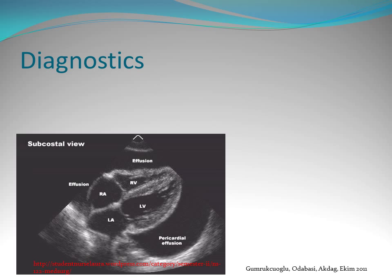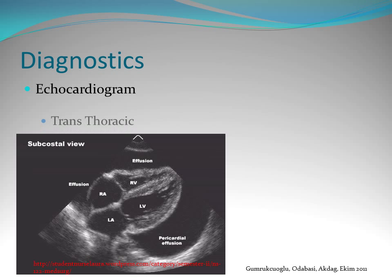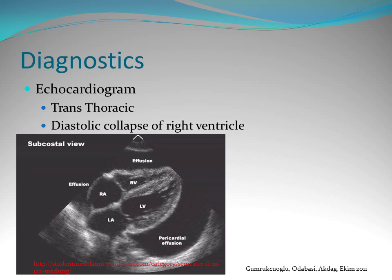For diagnostics, we'd get an echocardiogram, usually transthoracic. It's going to show diastolic collapse of the RV — since it's a lower pressure system than the left side, you're going to get collapse of the RV and sometimes the RA too, depending on how large the effusion is.